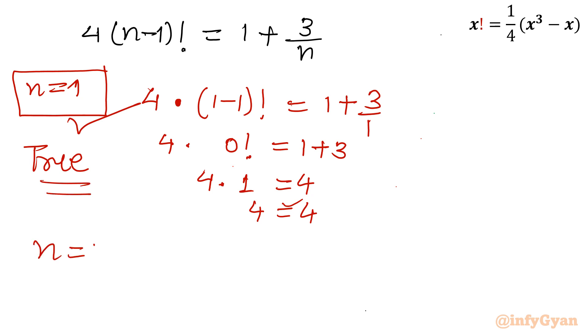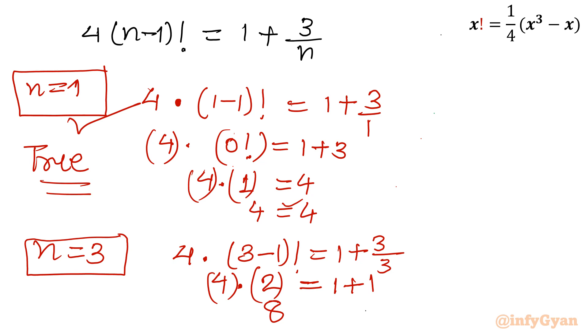Now let us consider the second case possible for the value of n, n equal to 3. So I will write 4 times 3 minus 1 factorial equal to 1 plus 3 over 3. So 4 times 2 factorial, which is 2, equal to 1 plus 1. So 4 times 2 is 8, RHS is 2. So 8 does not equal 2. So this is false or rejected solution. So conclusion is n equal to 1 is the only accepted value for whole number solution of this original equation.